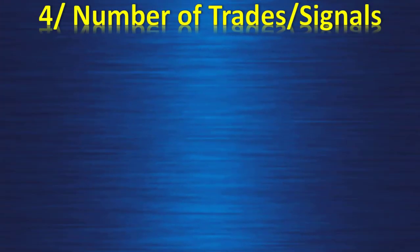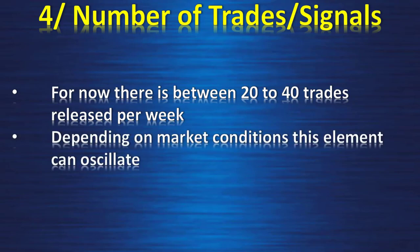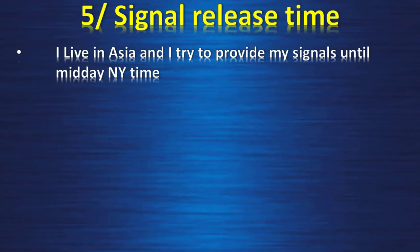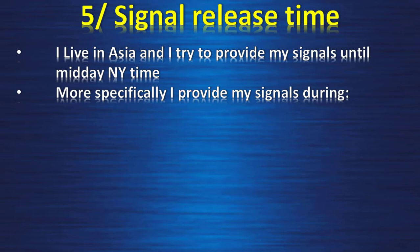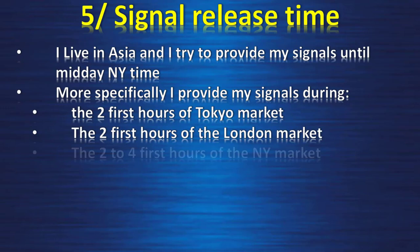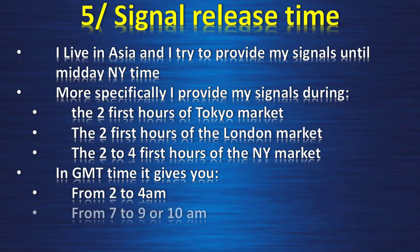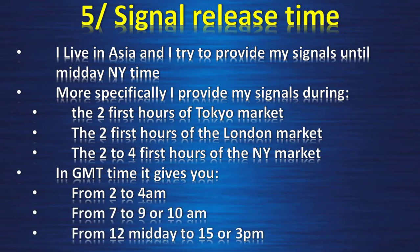There are currently between 20 to 40 trades released per week, depending on market conditions. Regarding signal release time: I live in Asia and provide signals until midday New York time. More specifically, I provide signals during the two first hours of the Tokyo market, the two first hours of the London market, and the two to four first hours of the New York market. In GMT, that is roughly 2–4 a.m., 7–10 a.m., and 12–15/16 (3 p.m.).